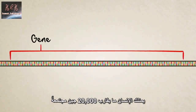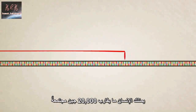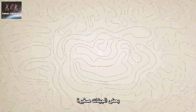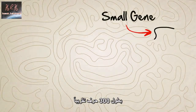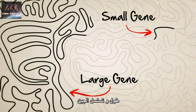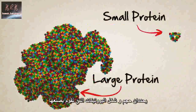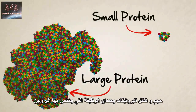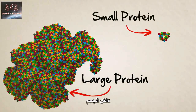A single strand of DNA contains thousands of genes, or unique protein recipes. Humans have roughly 20,000 altogether. Some genes are small, only about 300 letters long; others are well over a million. The length and sequence of a gene determine the size and shape of the protein it builds, and the size and shape of the protein determine the function that protein will have inside the body.